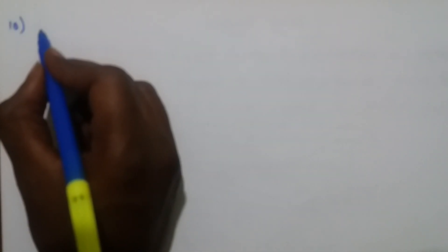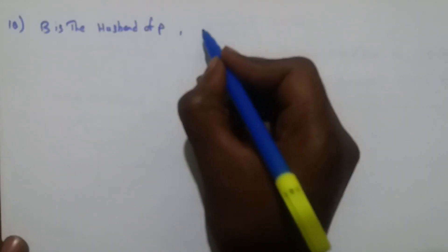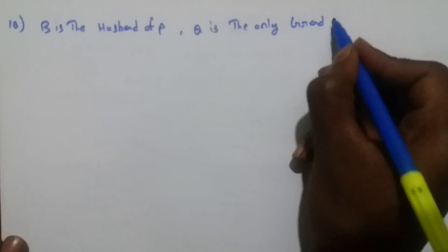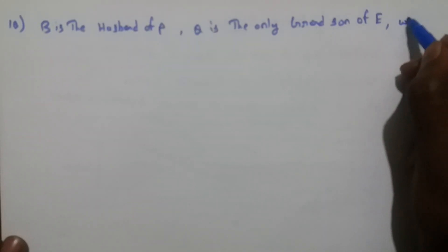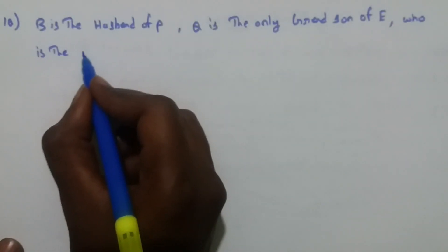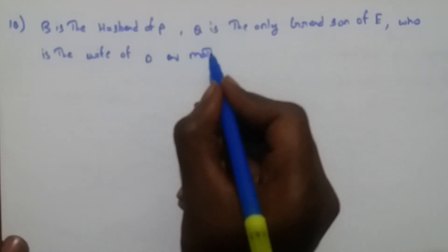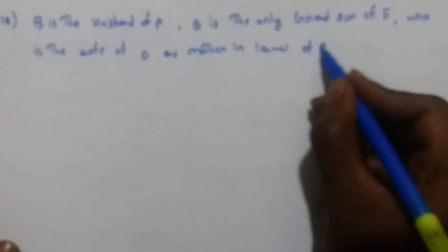Hi friends, now we are going to see problems based on blood relations. The first question is: B is the husband of P. Q is the only grandson of E, who is the wife of D and mother-in-law of P.